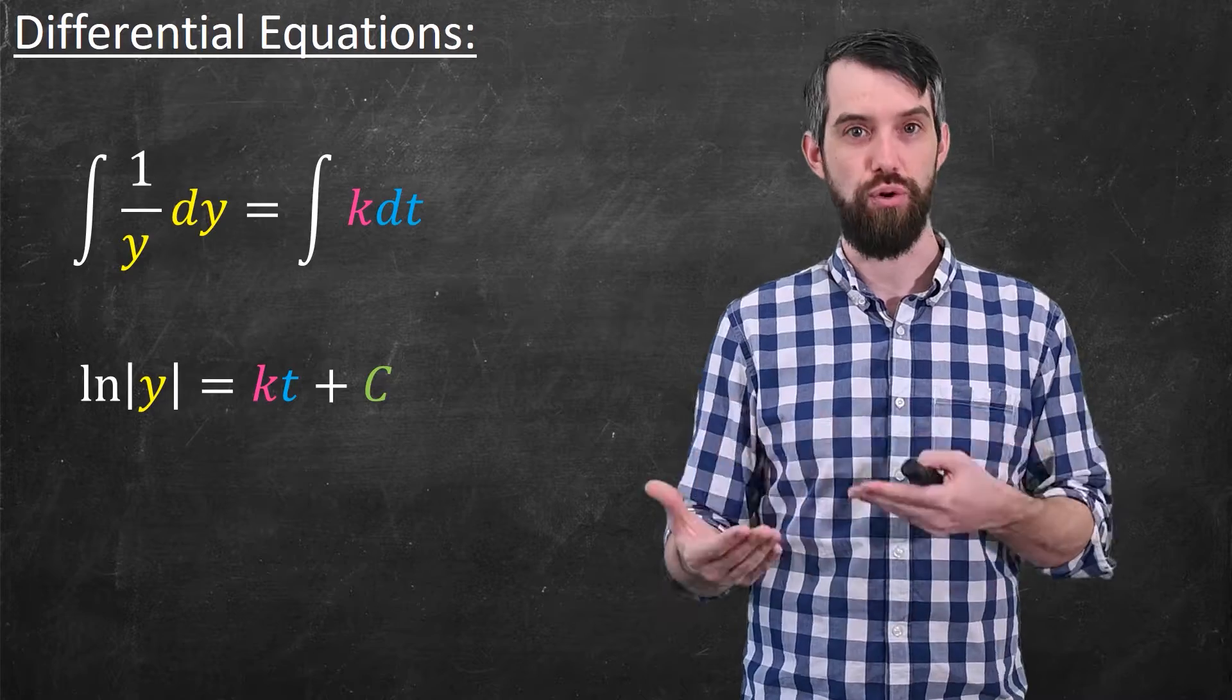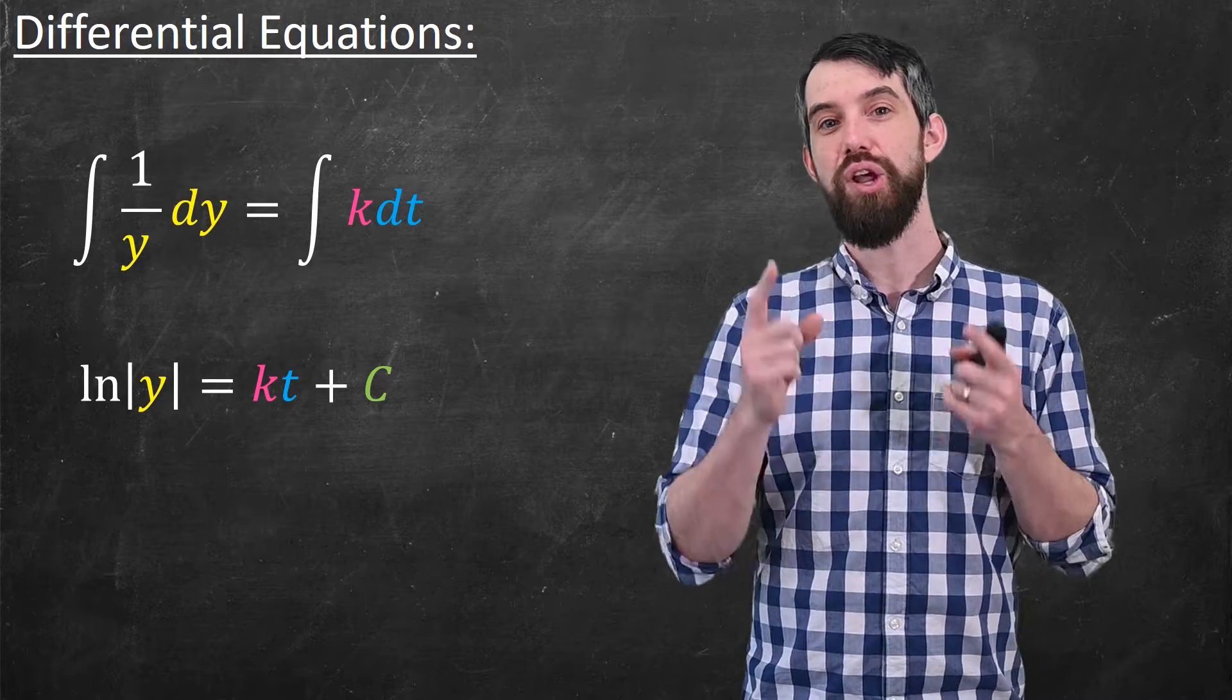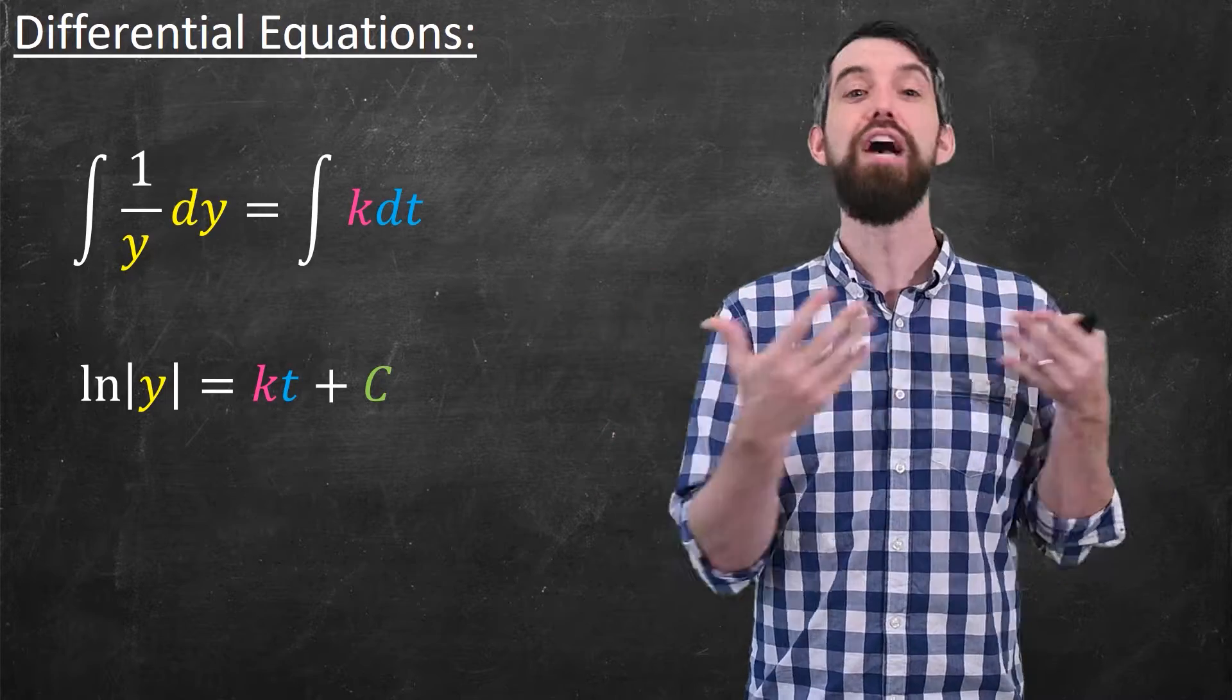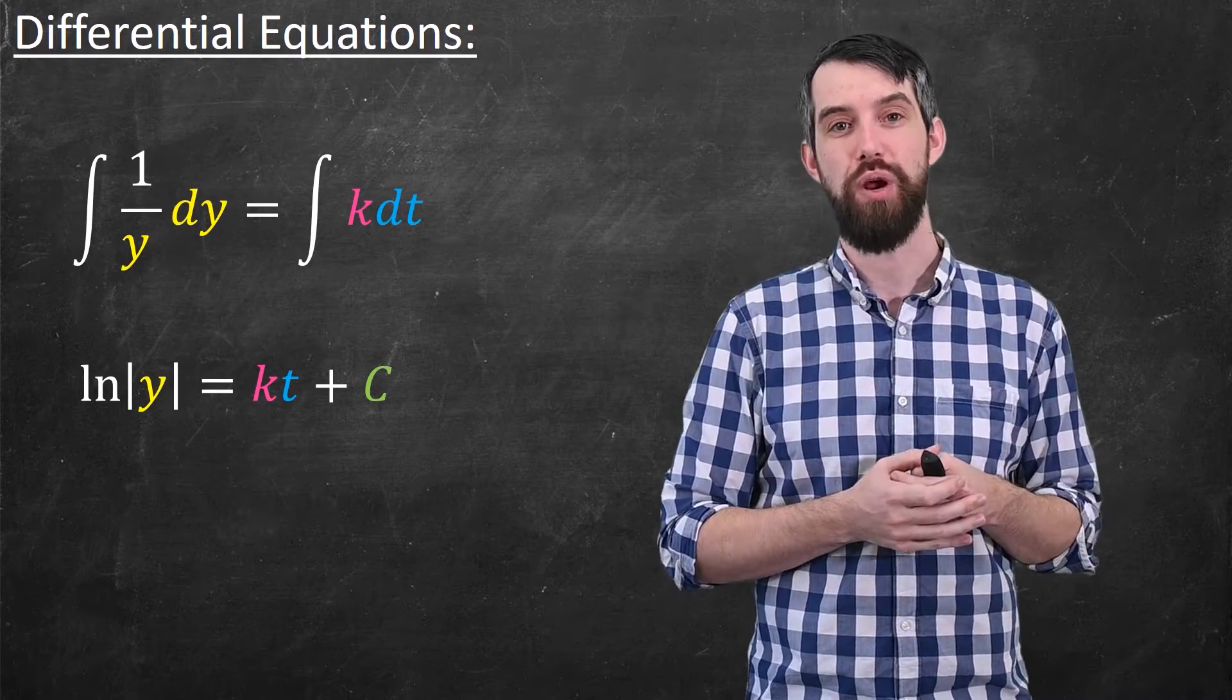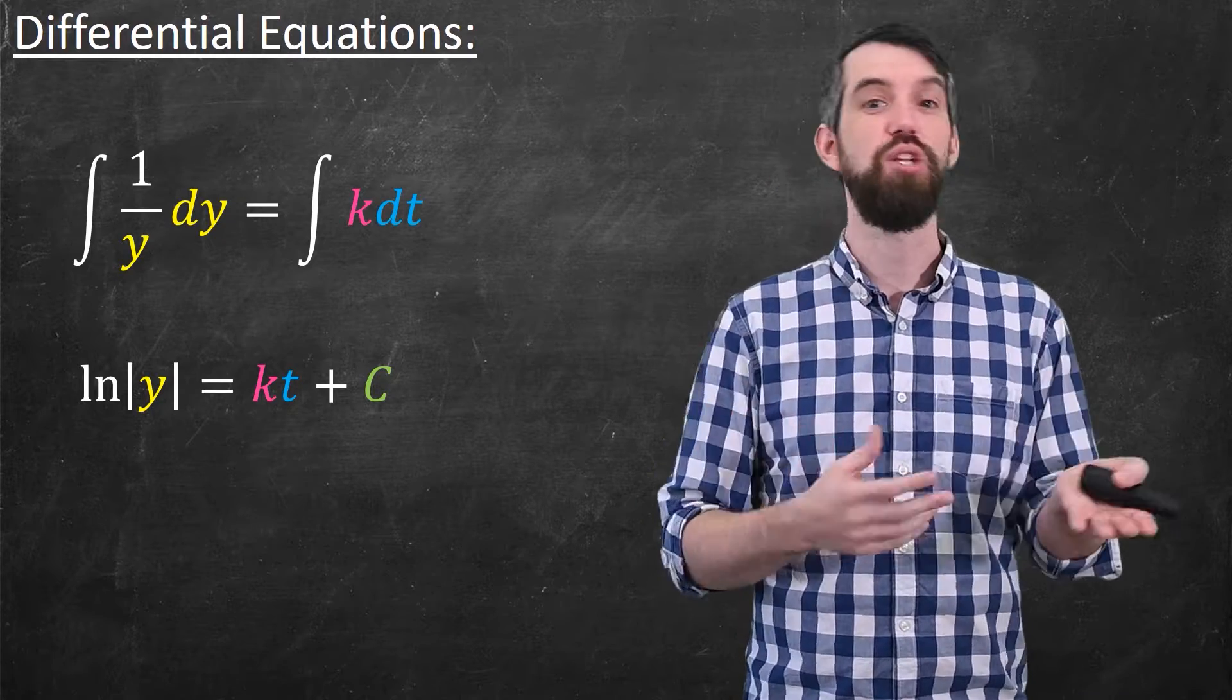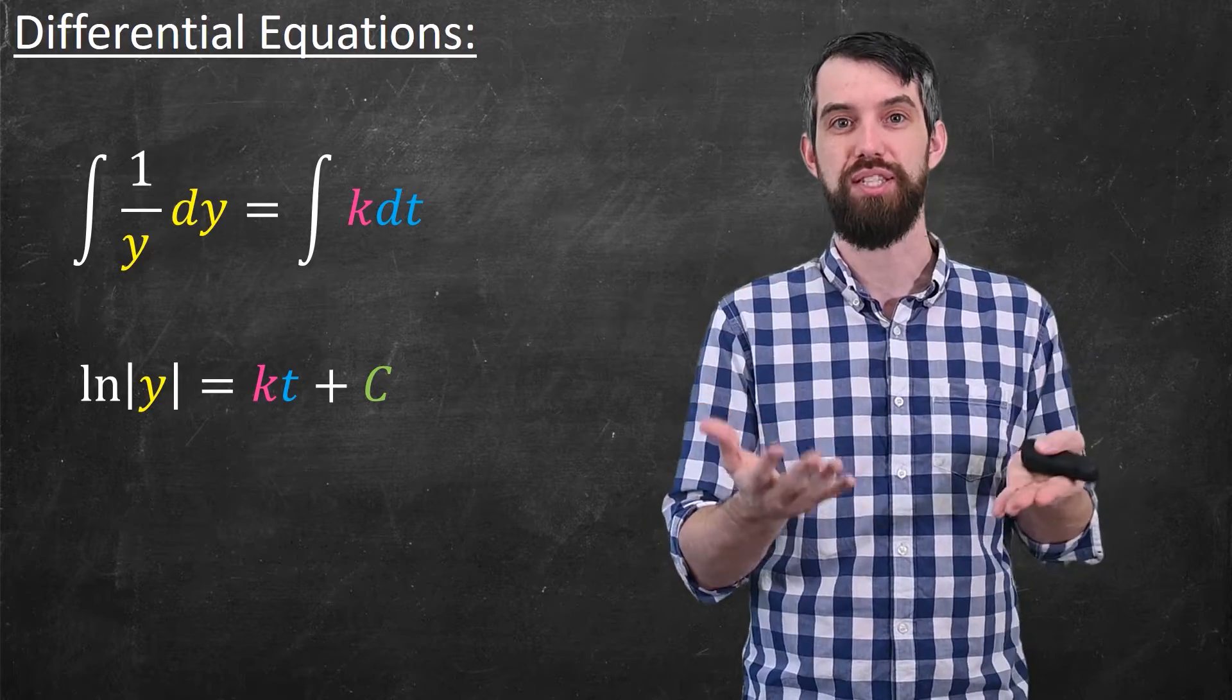If I then evaluate those two integrals, 1 over y integrates to the logarithm of y, and the value of k integrates to kt. Because these are indefinite integrals, I'm going to add a plus c on the right-hand side. I could have had two different plus c's, perhaps a c1 and a c2, for each of the integrals, but I'll just combine them into this single plus c on the right-hand side.